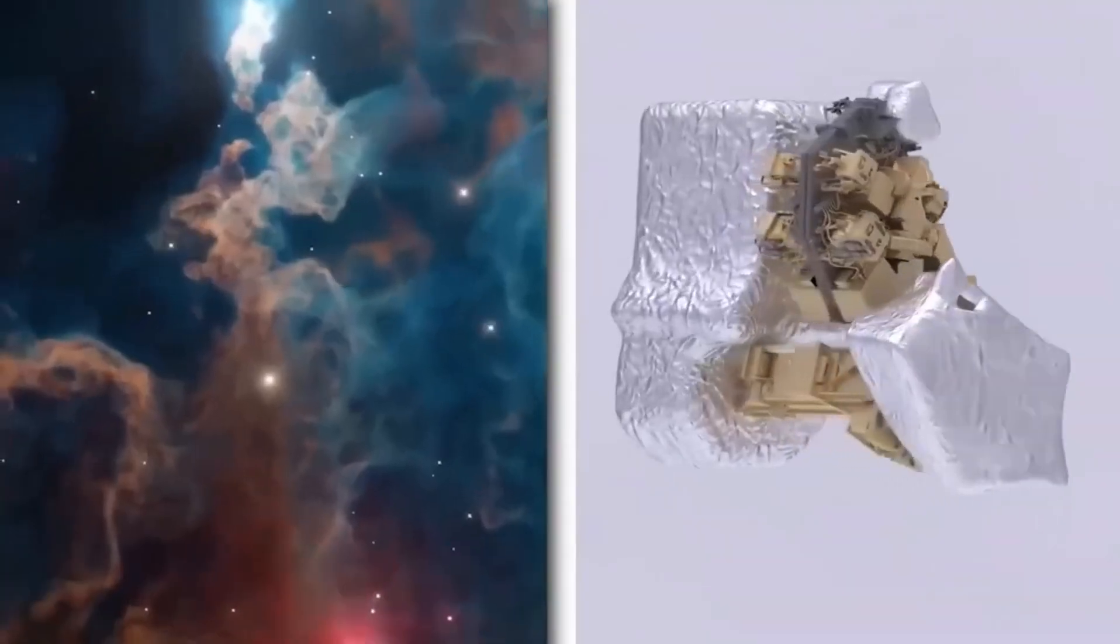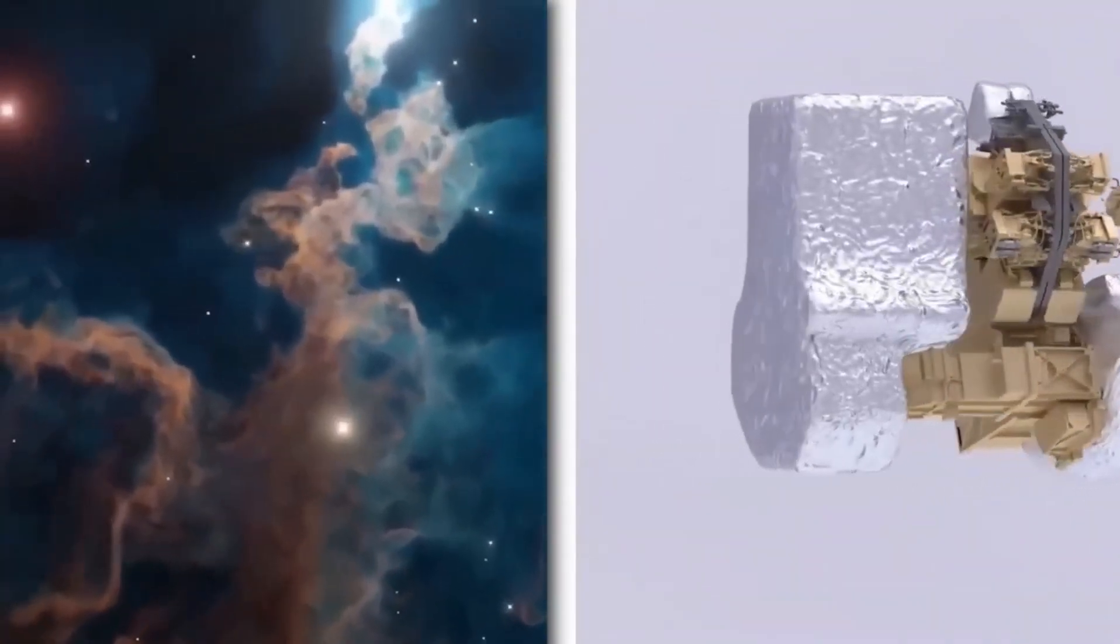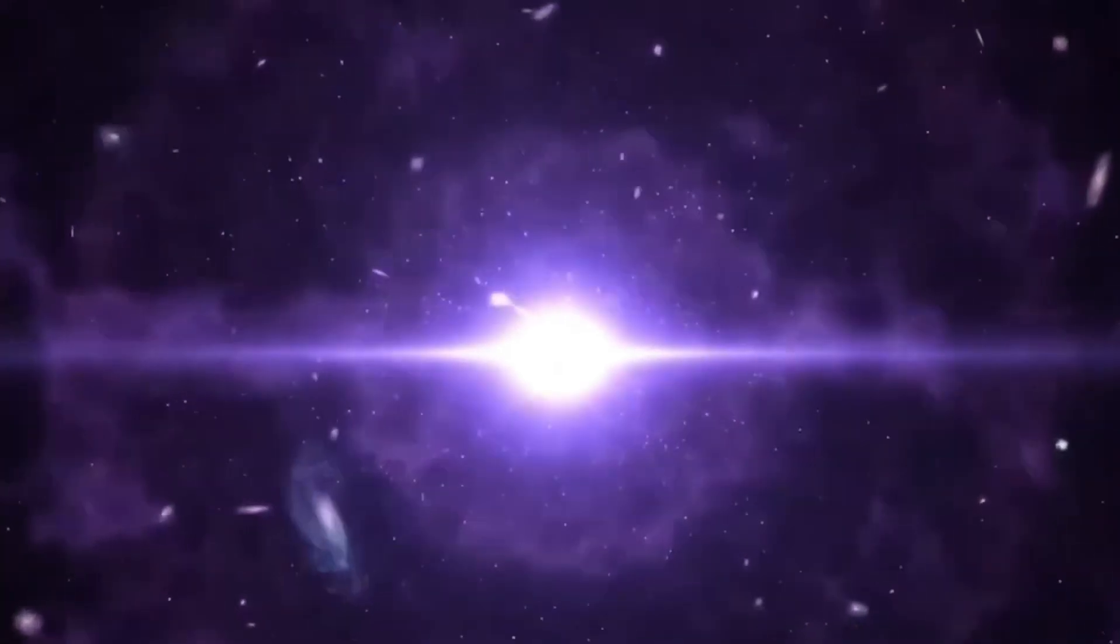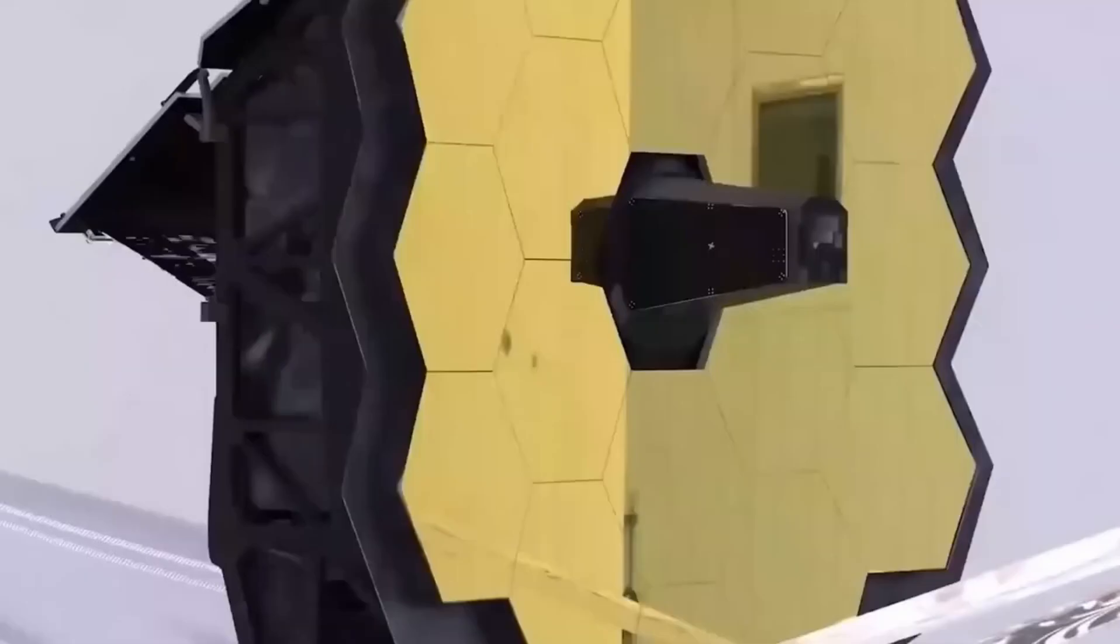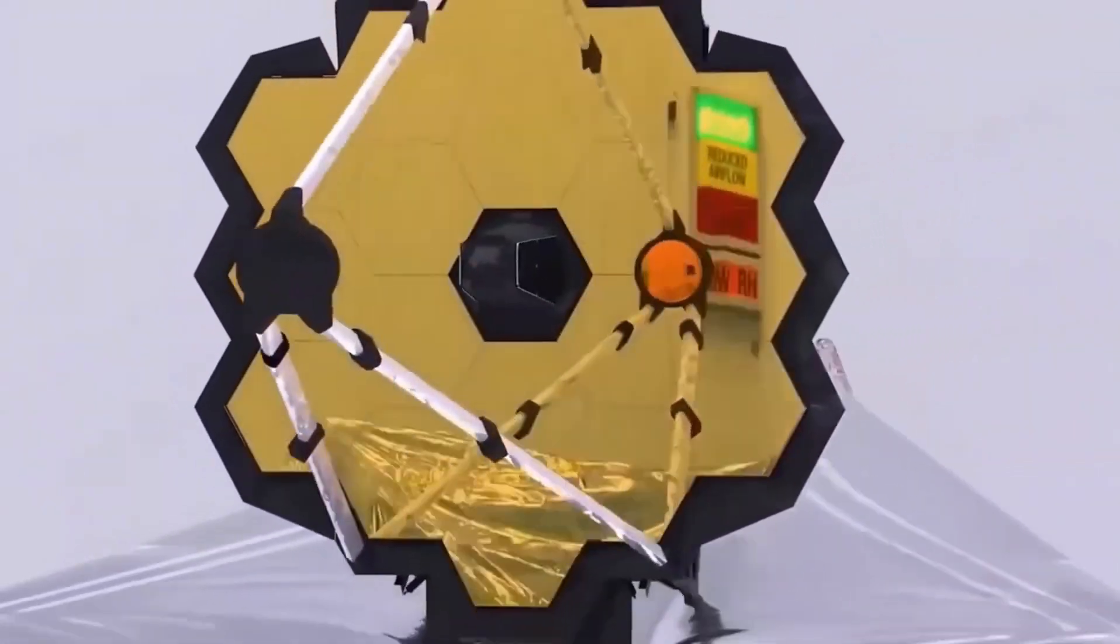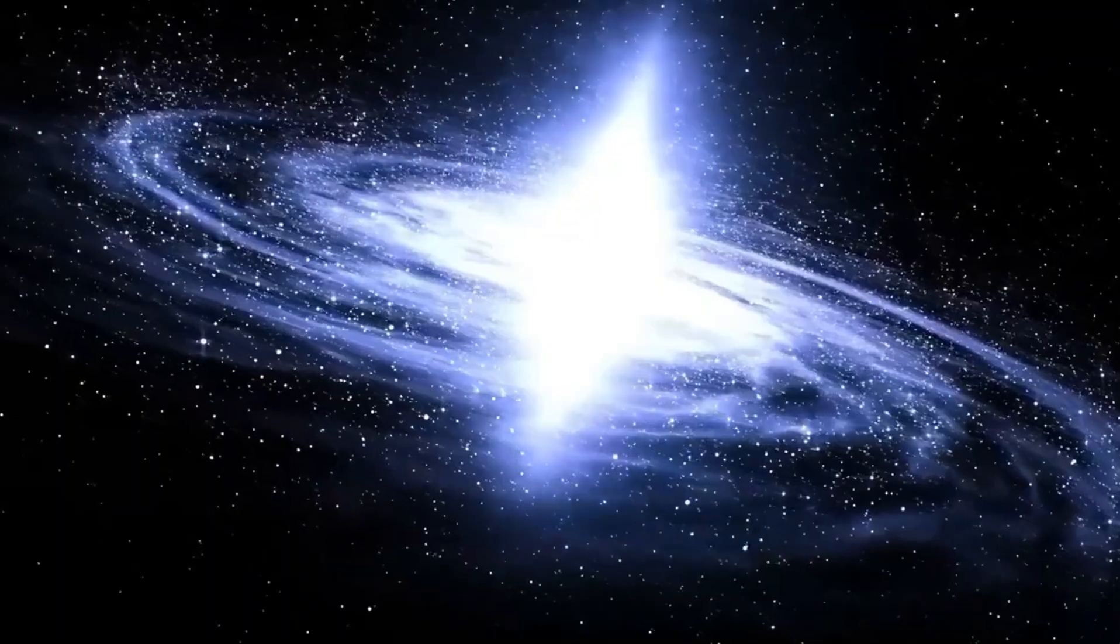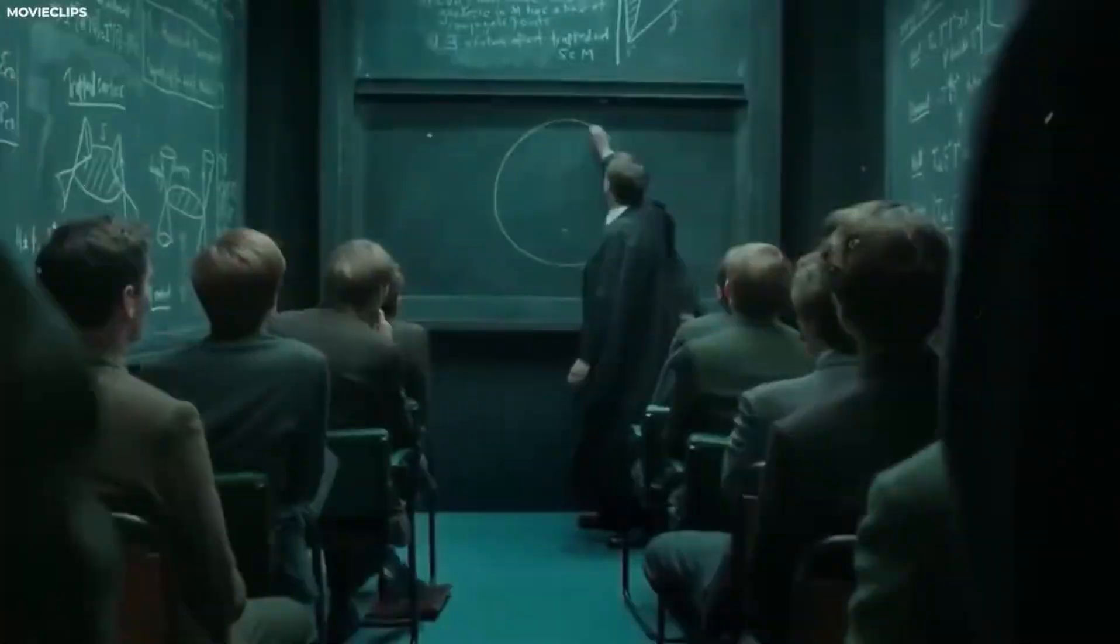Webb has taken the first direct image of an extrasolar planet. It has been used to capture stunningly precise photographs of the Tarantula Nebula, a region home to hundreds of newborn stars previously unseen by humans. The telescope has also revealed new hidden stars and the fine structure of enormous clouds of gas called the Pillars of Creation.